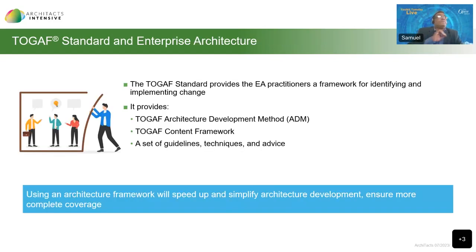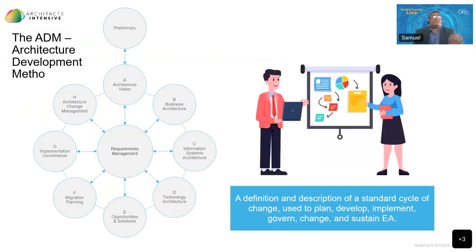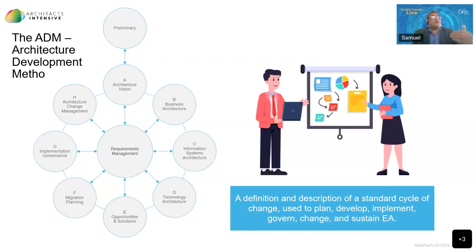Let's briefly talk about how it does it. The standard gives you a framework for identifying and implementing change. It does so by providing you with the ADM — the Architecture Development Method — a content framework, a set of guidelines, techniques, and advice. The ADM provides the practitioners with a definition and description of a standard cycle of change that is used to plan, develop, implement, govern, change, and sustain your enterprise architecture. It's iterative, it's cyclical, and a number of these ADM cycles produce the desired enterprise architecture.